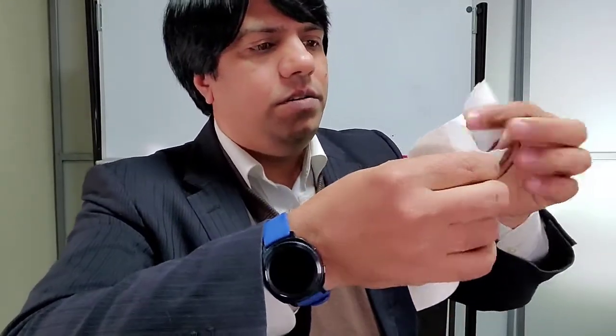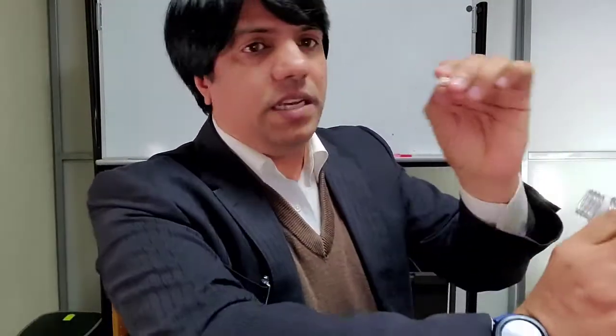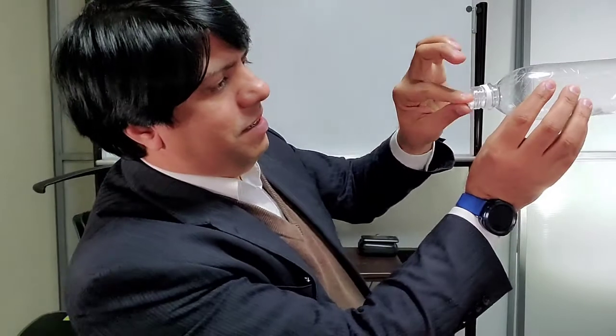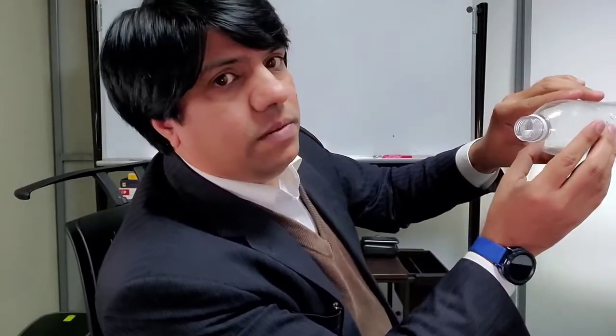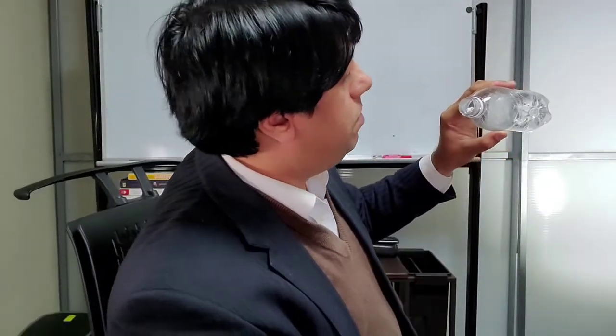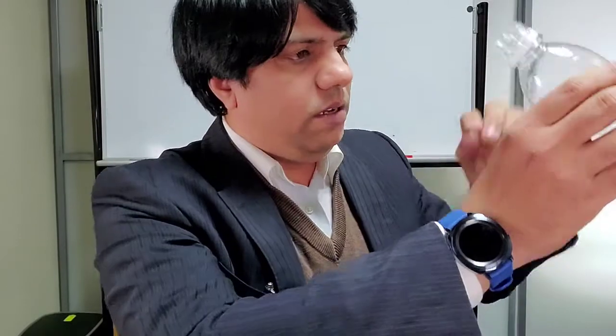Look at that — it flew out! Let's try another one. I make another small ball from the remaining paper, place it in the mouth of the bottle, and blow. Look at that — it always comes out. The paper will actually fly out instead of going in.